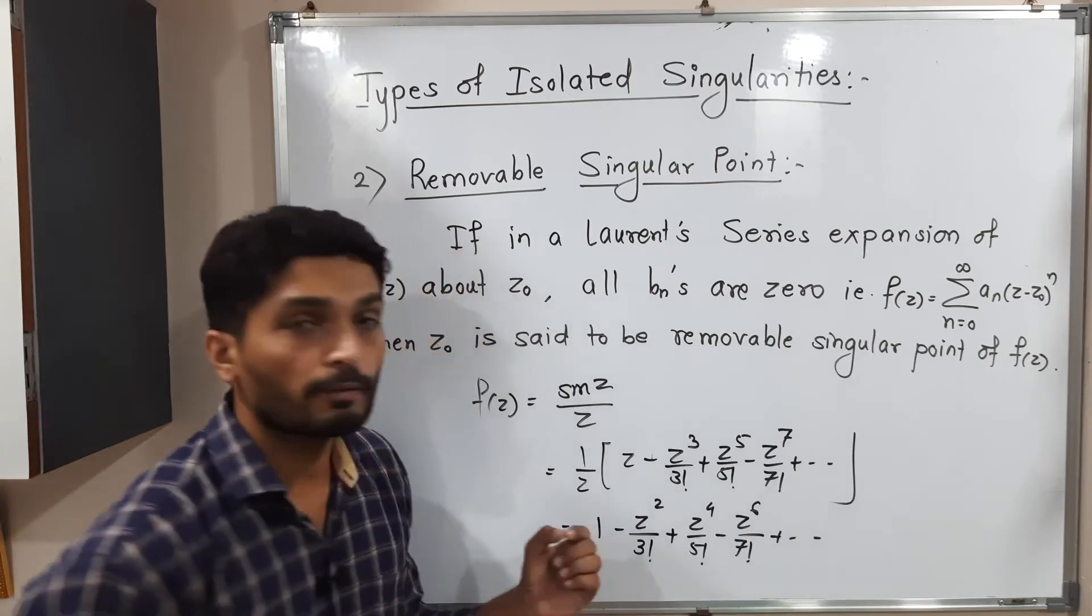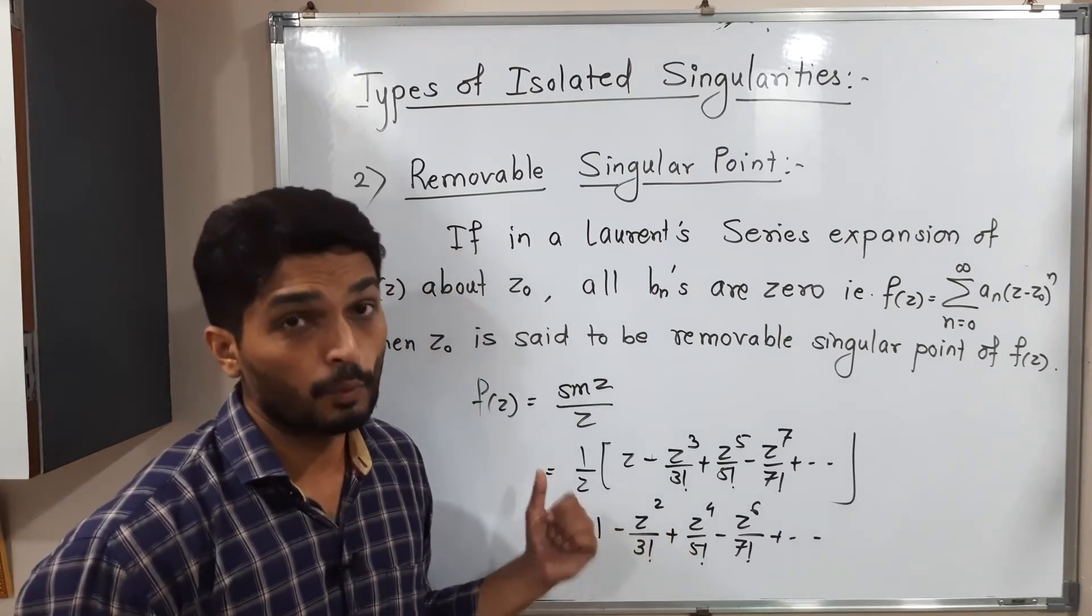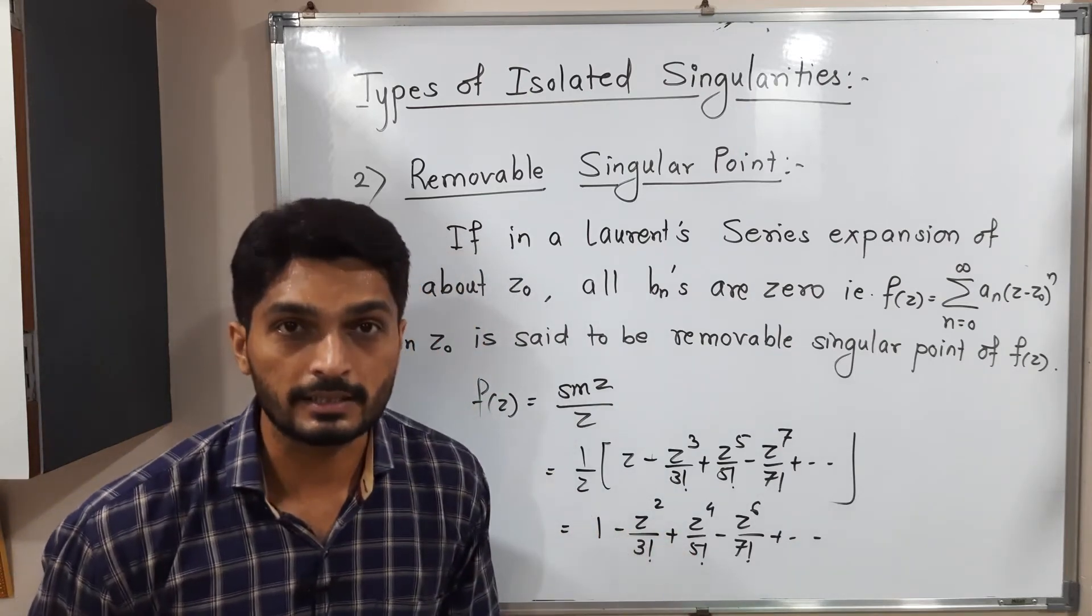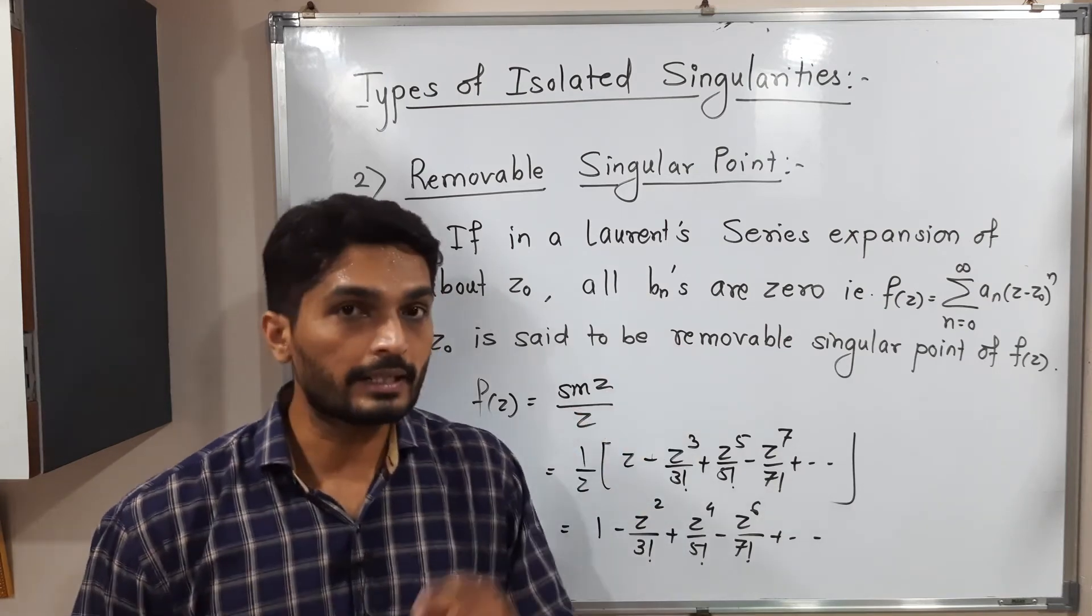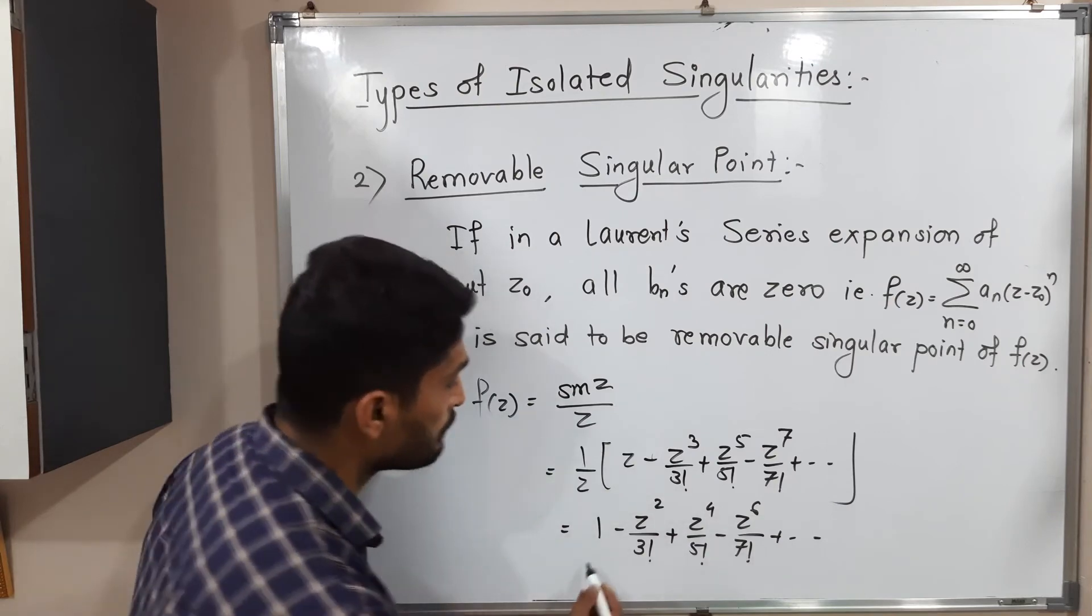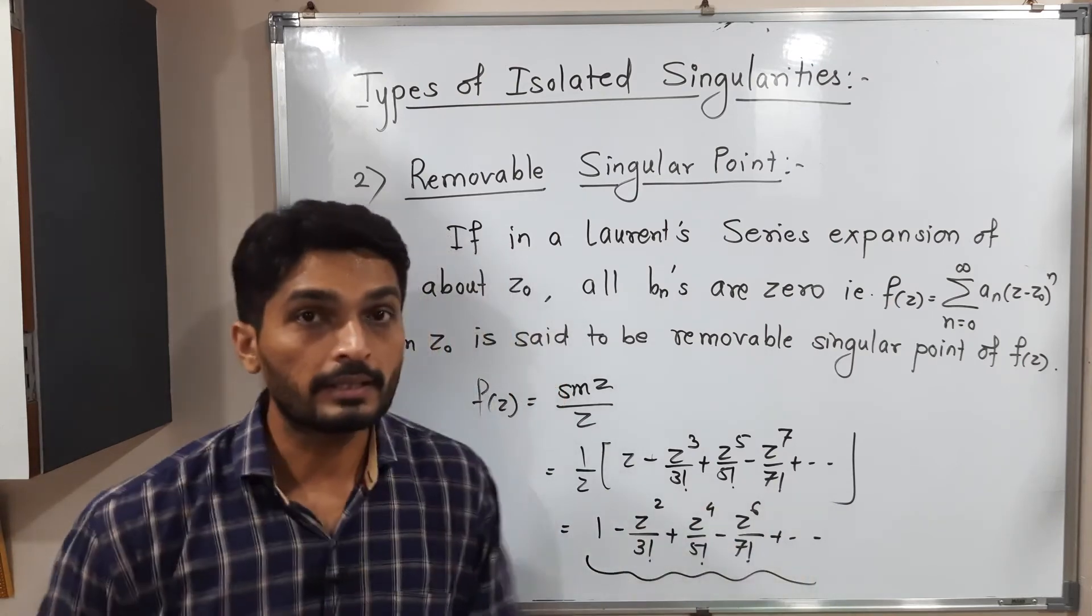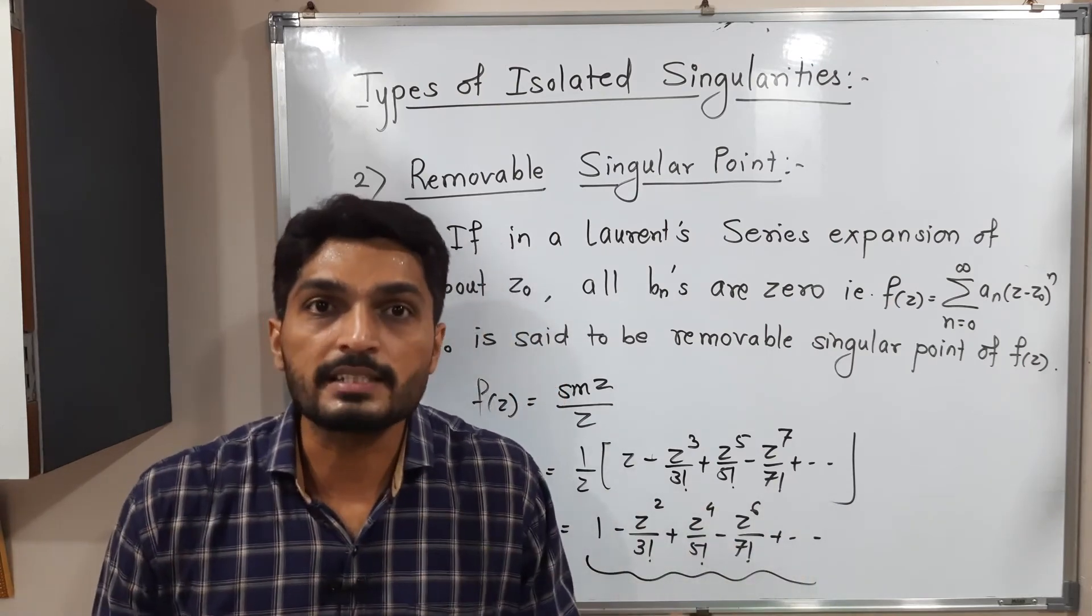If you multiply each term by 1/z, we will have a series like this. See, in this series, z appears only in the numerator. It does not appear in the denominator. That means the entire part is the analytic part. There is no principal part.